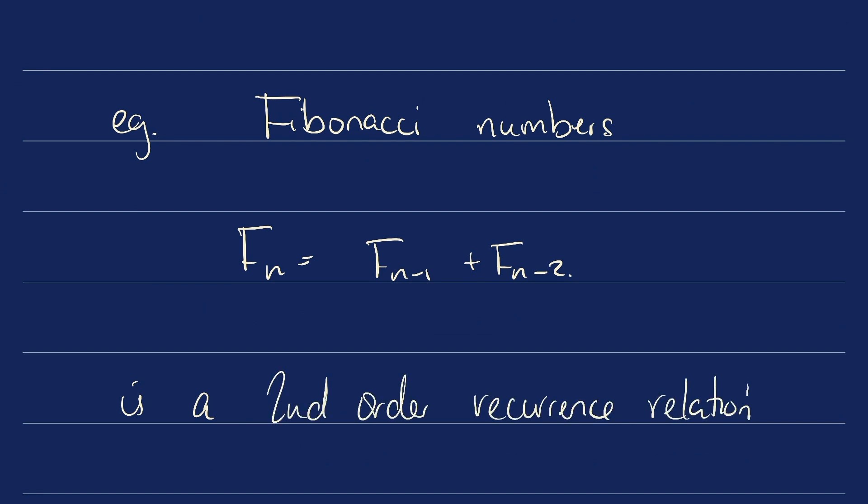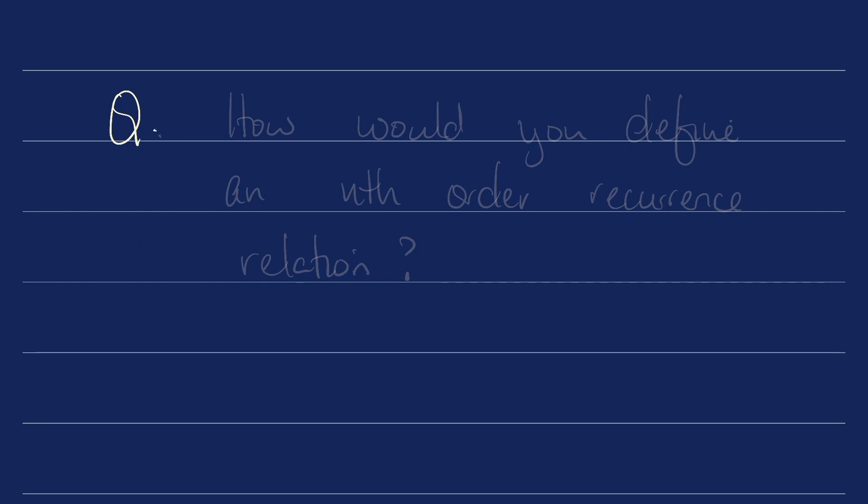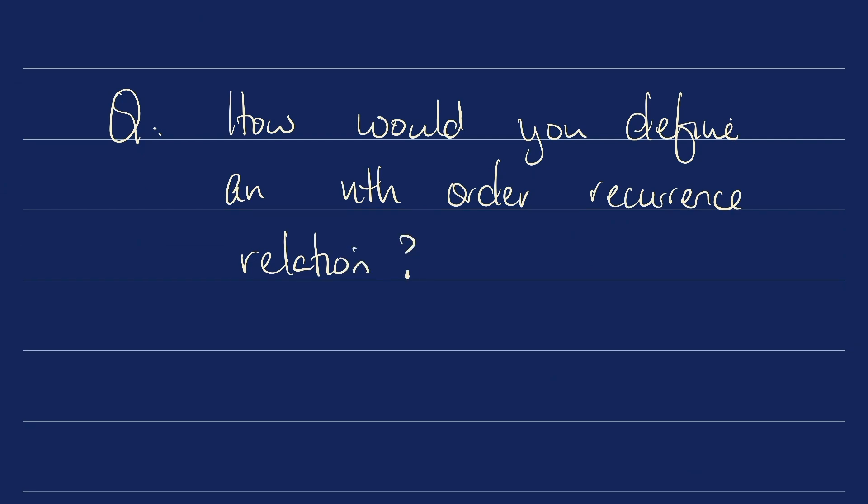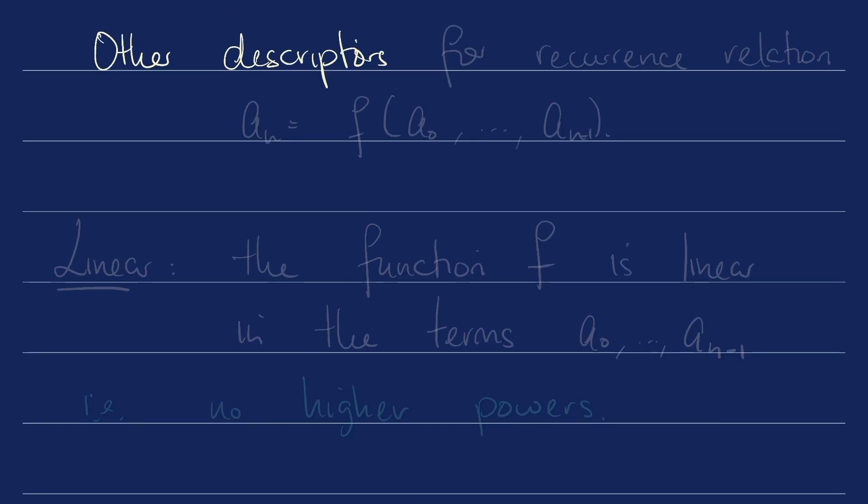So you can probably see where we're going and how to generalize this. Question. How would you define an nth order recurrence relation? Apart from the order, we can also attach other descriptors for a recurrence relation.